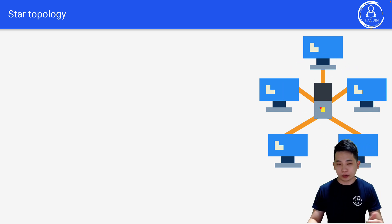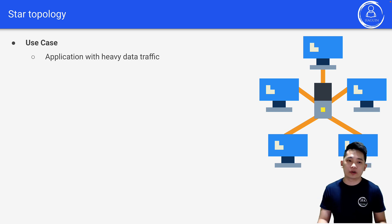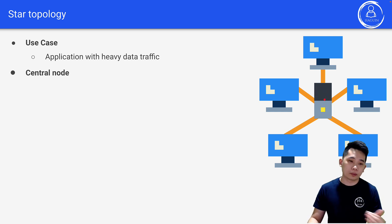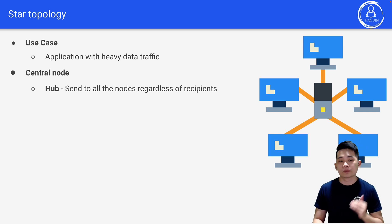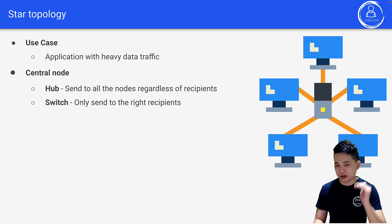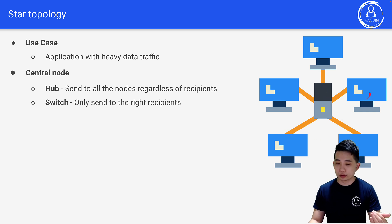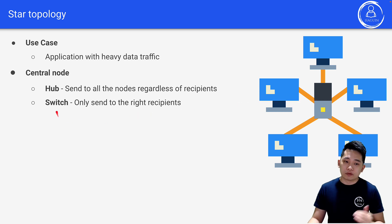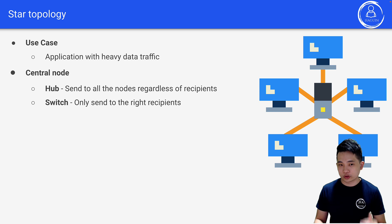Star topology — shown on the right — is used for applications with heavy data traffic. The central node can either be a hub, which sends to all nodes regardless of recipient, or a switch, which sends only to the right recipient. For example, if node A wants to send to node B: with a hub, the message broadcasts to all nodes; with a switch, it goes directly from A to B.